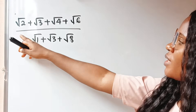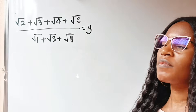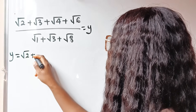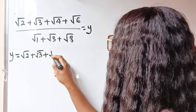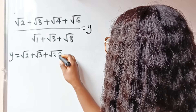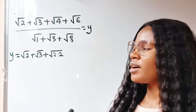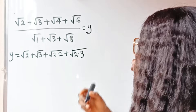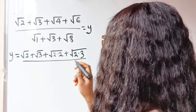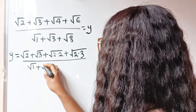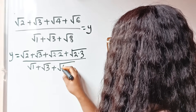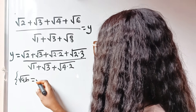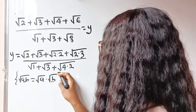First of all, if this expression is equal to Y, then we can say that Y is equal to the square root of 2 plus square root of 3 plus square root of 4, where 4 is 2 multiplied by 2. Our intention is to simplify. So we write 2×2 plus square root of 2×3, because 6 is 2×3, divided by square root of 1 plus square root of 3 plus square root of 4×2. Remember that square root of A×B equals square root of A multiplied by square root of B.